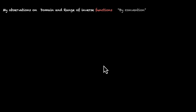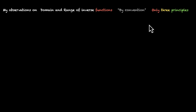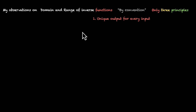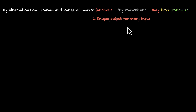While looking at these values, I realized that I would have reached the same conclusion if I used only three principles. Let me share those principles. The first one is: because we want functions, we're looking for a unique output for every input. Here's an example.